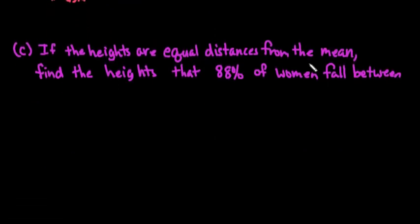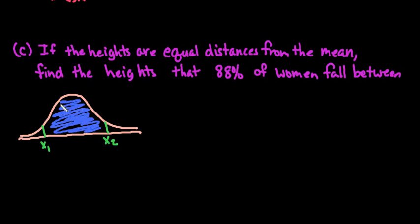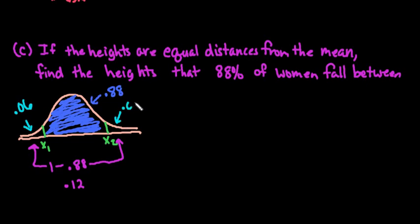The last scenario that we want to look at is if the heights are equal distances from the mean. We want to find the heights that 88% of women fall between. So for this one, what we have is we have two heights. We have X1 and we have X2. So this would be X1. And then we have another height, X2. And we want to find what those values are to have 88% in between. So if I look at this part right here, we would be looking for 0.88 in between. And if you recall on this, the outside portion is 1 minus the between part. So the two tails over here would be 1 minus 0.88, which is 0.12. And half of it would have to go to each. So this area over here is 0.06, and this area over here is also 0.06.